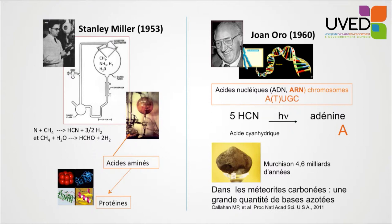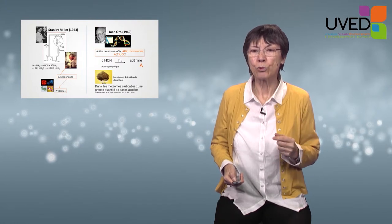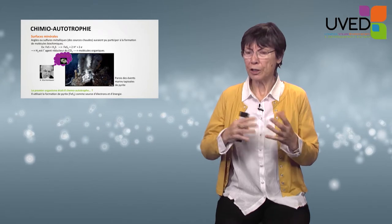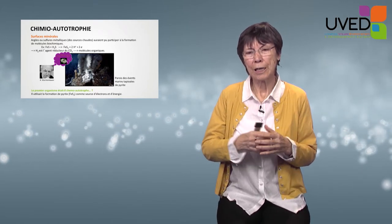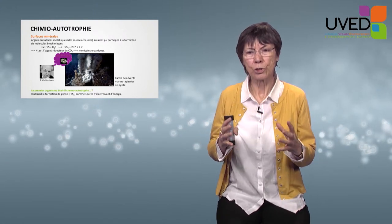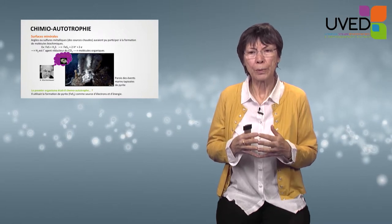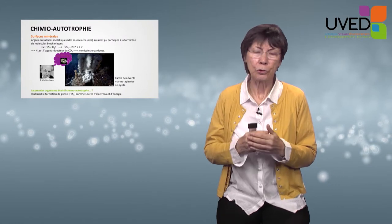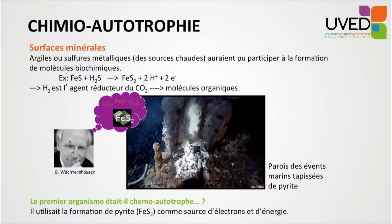Many nitrogen bases were found in meteorites — you can refer to a 2011 paper for all the details. A second scenario, not incompatible with the prebiotic soup, relies more on the role of mineral surfaces in the origin of life. This is Günther Wächtershäuser's scenario, preceded by Desmond Bernal and Cairns-Smith. The scenario uses clay and iron sulfide as having participated in the formation of chemical molecules, using also gaseous environmental compounds. He calls this the chemoautotrophy scenario.